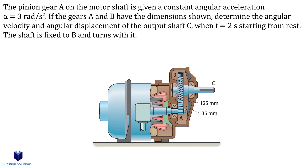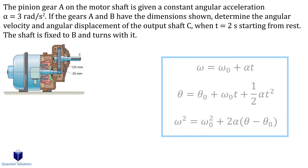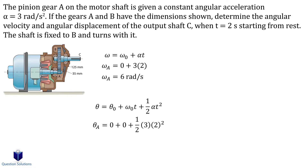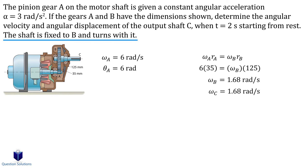In this question, we need to find the angular velocity and angular displacement of shaft C. The angular acceleration of gear A is constant, so we can use the equations for constant angular acceleration. First, we find the angular velocity of gear A using ω = ω₀ + α·t, plugging in values where everything starts from rest at t equals 2 seconds. We also find the angular displacement using the appropriate constant-acceleration equation. Then we apply gear ratios to find the angular velocity and angular displacement of shaft C, remembering that shaft C is attached to gear B.